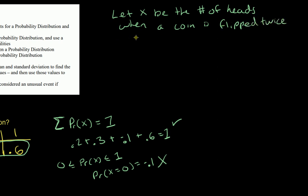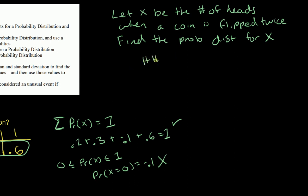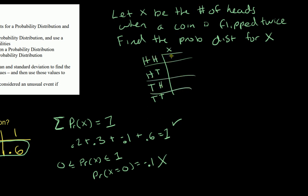We want to find the probability distribution for X. Let's list the sample space: we could have head-head, head-tail, tail-head, or tail-tail. The value of X — the number of heads — is 2, 1, 1, and 0 respectively for those outcomes.